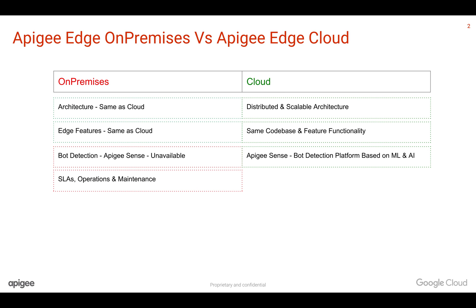When it comes to SLAs, operations, and maintenance, you need to take care of those on-premises because Apigee does not have any control of the infrastructure where Apigee is installed. You are responsible for SLAs, operations, and maintenance — including upgrading Apigee releases and applying patches. Apigee doesn't manage that because it can be installed inside demilitarized zones with no outside network connections.